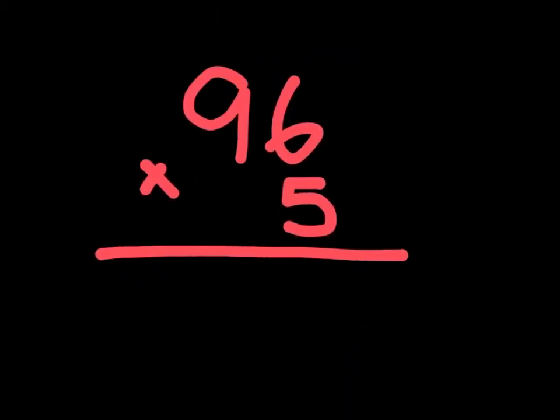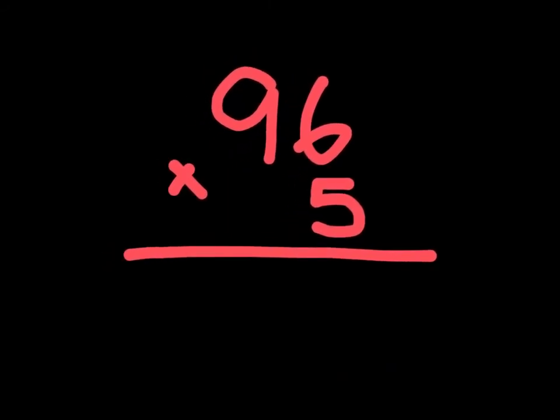Now, let's go on to a slightly harder problem on our list. So, our problem is we have 96 times 5. So, to attack this problem, we have to make our first pathway. Our first pathway is that it goes from 5 to 6. 5 to 6 is just 5 times 6, meaning 30. So, we would write a 0 here. Then we would have to carry over the 3.